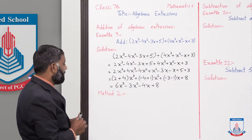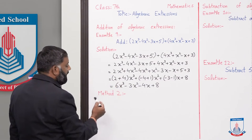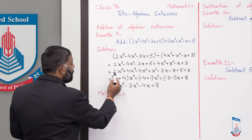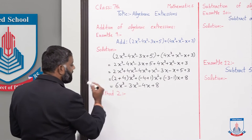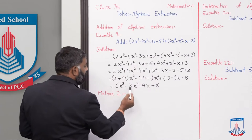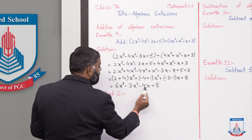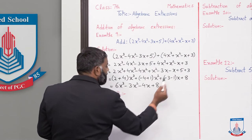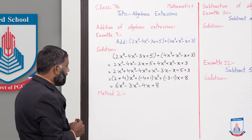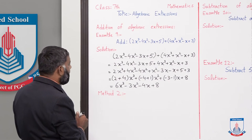Yeh jo step maine kiya hai common wala, is step ko agar na bhi karein to directly: 2 + 4 = 6x³, minus 4 + 1 = minus 3x², minus 3 - 1 = minus 4x, plus 8. Yeh direct bhi kiya ja sakta hai. Ab students isi addition ko hum method 2 se solve karenge.